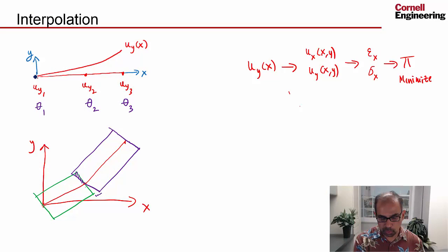Earlier we saw that once we know the deformed shape or the state of the neutral axis or the midline, we can go all the way to determining the potential energy of the beam.